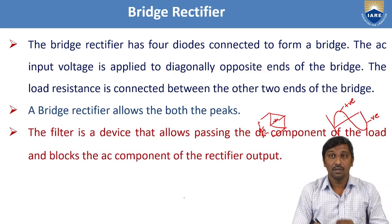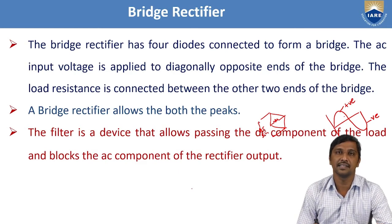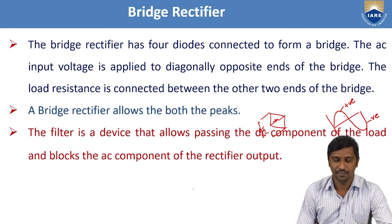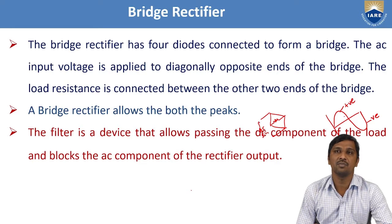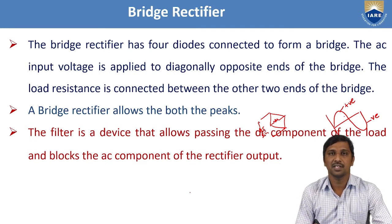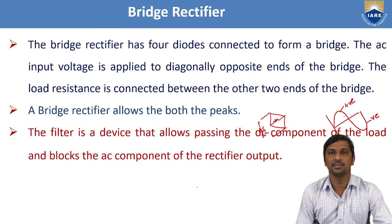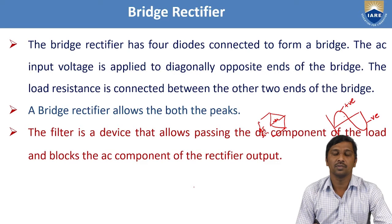If you want to reduce AC signals or harmonics from a pulsating DC signal, we need to use the filter concept. By using the filter, we remove the AC components to produce only the DC output voltage. Most electronic devices require only the DC component, but the rectifier output is a pulsating DC signal containing DC voltage along with AC harmonics. Hence we approach the filter concept to reduce the AC harmonics and produce only the DC output voltage.